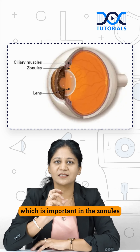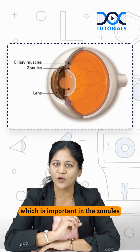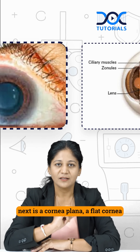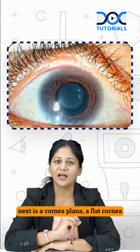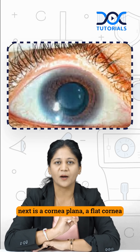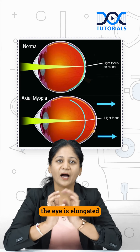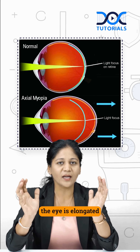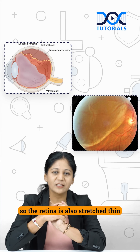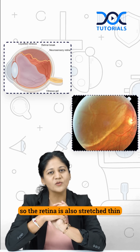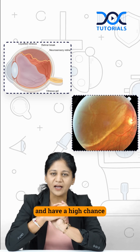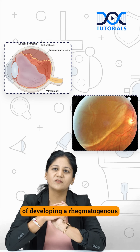protein which is important in the zonules and the capsule. Next is cornea plana — a flat cornea. The eye is elongated, causing axial myopia, so the retina is also stretched thin, with a high chance of developing a